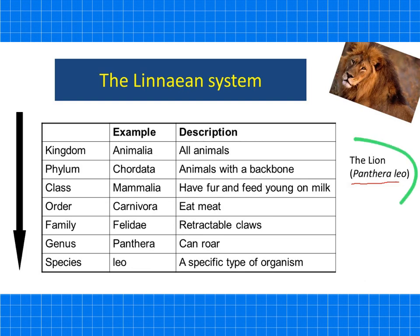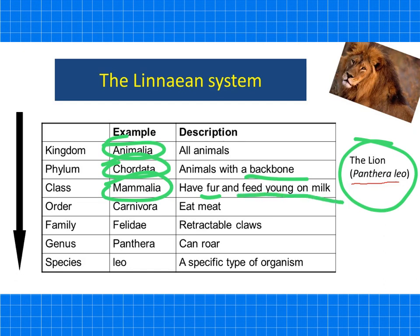The lion's kingdom is Animalia — all animals. Phylum is Chordata — they have a backbone. Class is Mammalia, so mammals, the same as us. They have fur; we don't, but we do feed young on milk. Order is Carnivora — they eat meat. Family is Felidae, meaning retractable claws. Genus is Panthera, meaning they can roar. And species is leo.